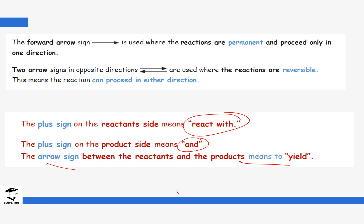Arrows are also unique in chemistry. When you write a full single arrow, it usually means that the reaction is moving forward and it is permanent — it cannot go back. Like we said of chemical changes, if you see one arrow in a chemical equation, it tells you that reaction is permanent. It moves in one direction. We cannot reverse that chemical reaction.